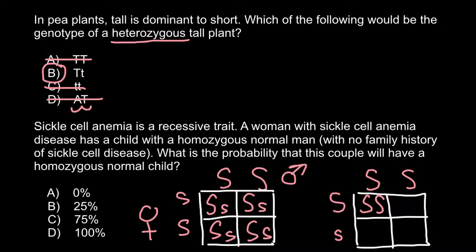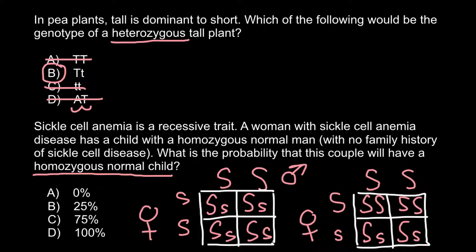From this second Punnett square, we can see the outcomes: capital S, capital S; capital S, capital S; capital S, small s; and capital S, small s. Now let's return to our question — what is the probability that this couple will have a homozygous normal child? I want to underline: homozygous normal child.